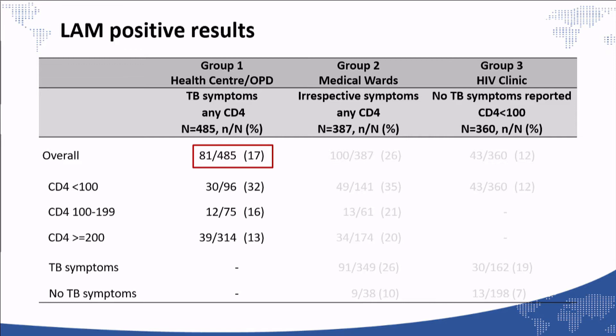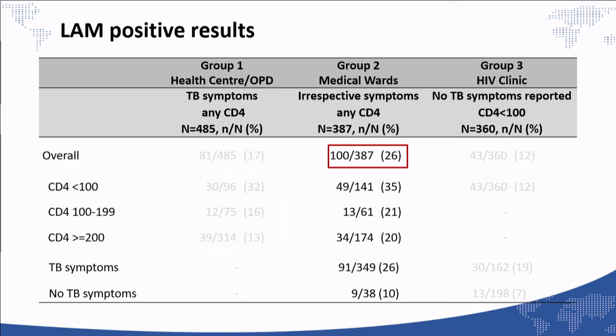This table shows LAM positive results across the three groups. In group one — patients with symptoms attending a health center regardless of CD4 — 17% of all patients had a LAM positive result. Even among patients with CD4 greater than 100, in whom the test is currently not recommended, relatively high proportions had a positive LAM. In group two, LAM positivity was higher at around one quarter of patients, and again, among those with CD4 greater than 100, a relatively high proportion had a positive LAM.